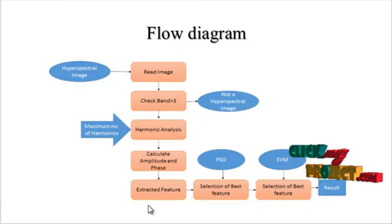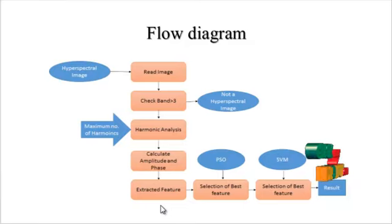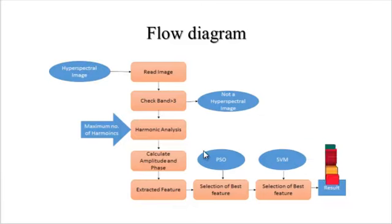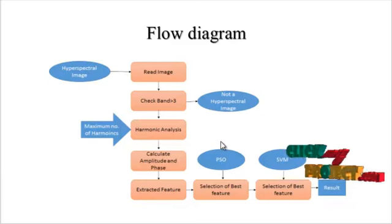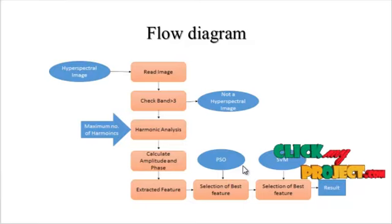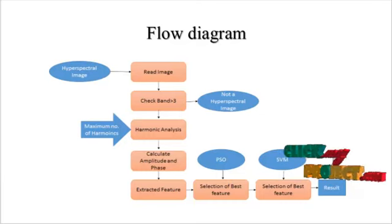After band selection, the required features are extracted using the feature extraction algorithm. Feature selection is then done using the PSO optimization method, which optimizes the corresponding features and neglects the others. After feature selection, SVM is applied to classify the region of interest separately.